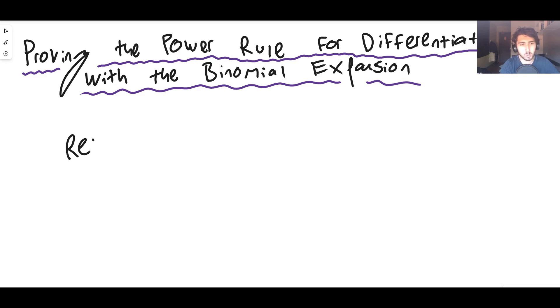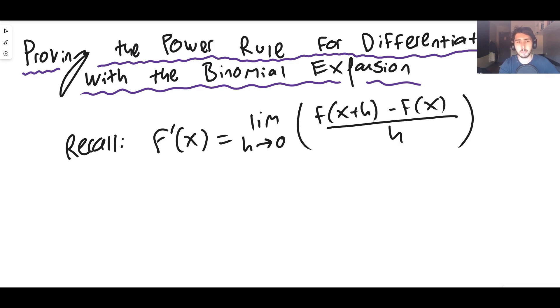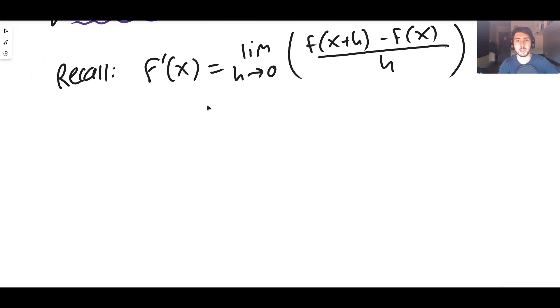So first thing, let's just recall what the formula is for the derivative of a function. The derivative f prime of some f of x is just the limit as h goes to 0 of f of x plus h minus f of x over h. That's the definition of the derivative of a function.